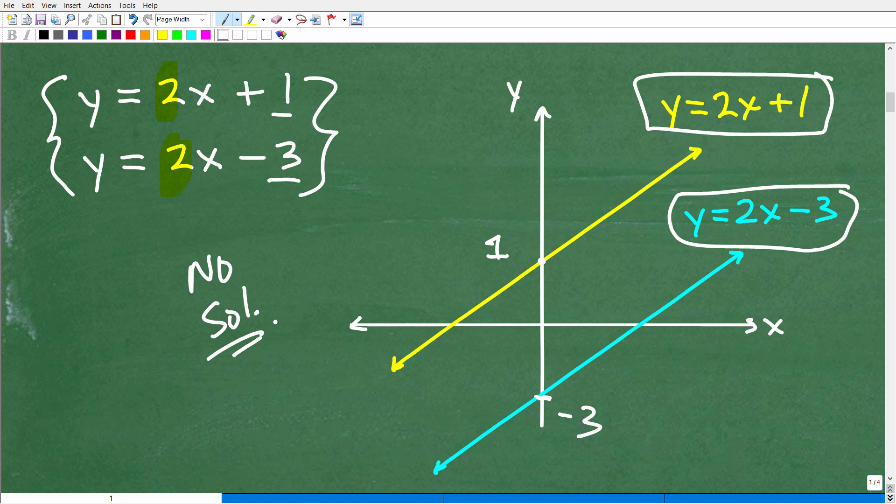So, why doesn't the system have a solution? Well, you could put down, hey, they are parallel to one another. If you put something like that down in your comment section, that is excellent.